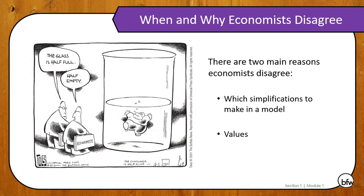When and why economists disagree — we'll talk about this more in class — but there are two main reasons: number one, which simplifications to make in a model, and number two, values. In general, most economists agree on big-picture items, but where they disagree is where to focus — whether it's in the short term or the long term, or who to focus on within an economy.